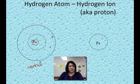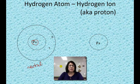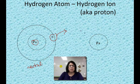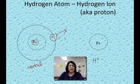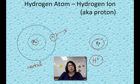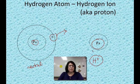Atoms don't like to exist like this — they like to have full valence shells. This one electron in this shell does not make hydrogen stable, so what it wants to do is get rid of that electron. When that electron leaves, what we have left over is a hydrogen ion, because the negative electron left and all that's left is one proton. The hydrogen has a positive charge. This is a hydrogen ion, but it is also simply just a proton. Those words are used interchangeably, so be aware of that as we move forward.